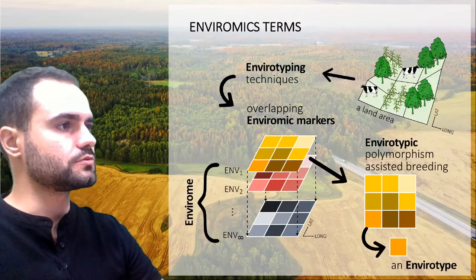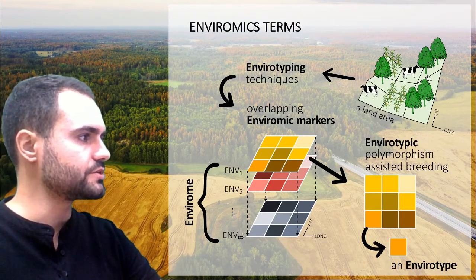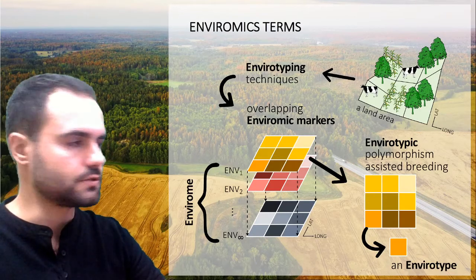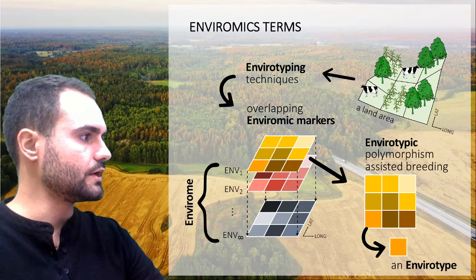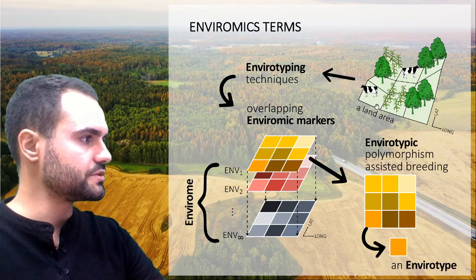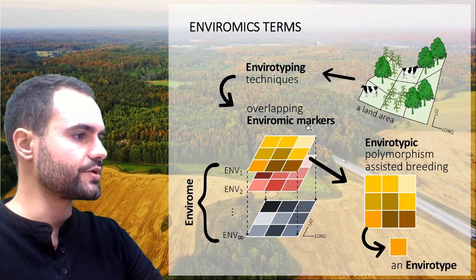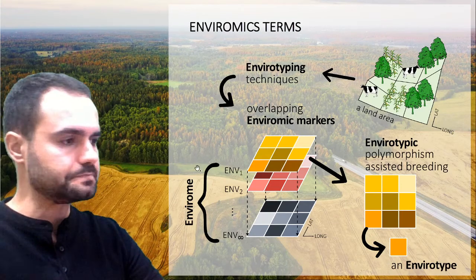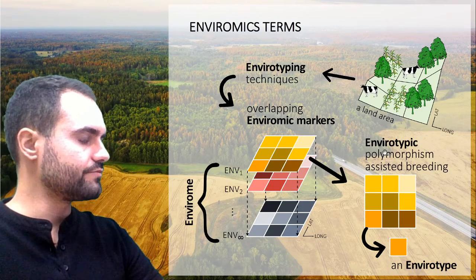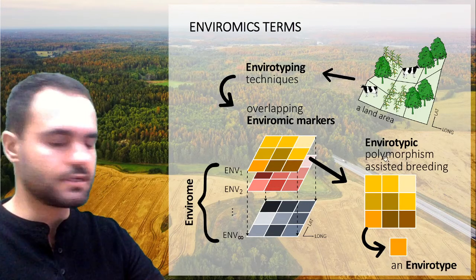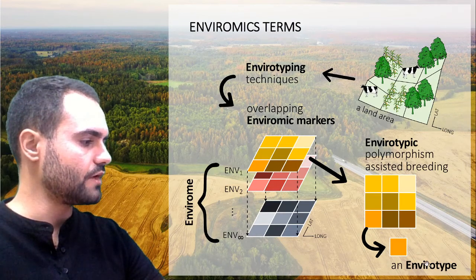Talking about enviromics terms, we have a landscape with a lot of information, biological or not. By envirotyping techniques, we can retrieve some environmental information from this area. A set of enviromic markers will compose the envirome, and taking a single enviromic marker, we will have the envirotype polymorphism. A single pixel will have an envirotype.